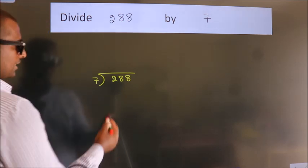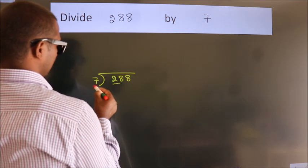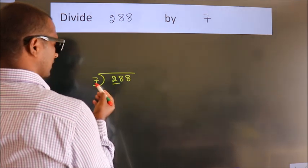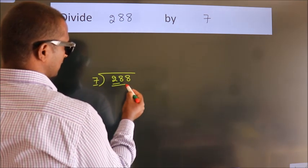Next, here we have 2, here 7. 2 is smaller than 7, so we should take 2 numbers: 28.